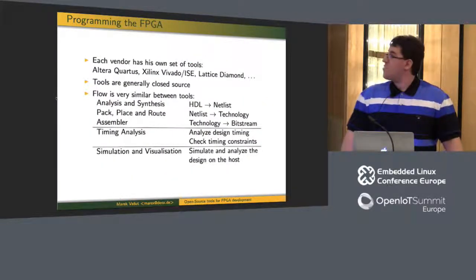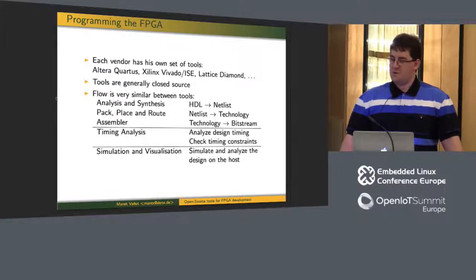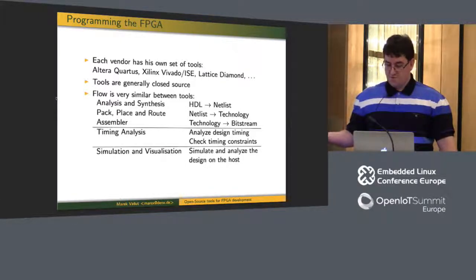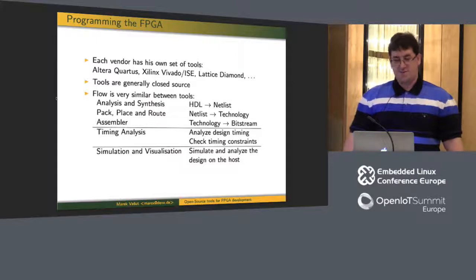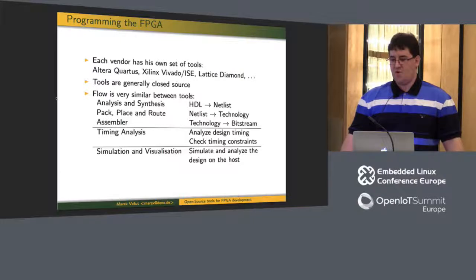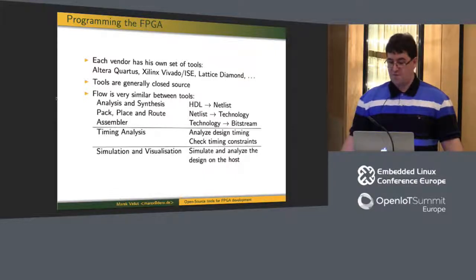Now let's look at how we program the FPGA. Each vendor provides a toolchain. These are typically proprietary, closed source, big packages — typically tens of gigabytes to download. Altera has Quartus, Xilinx has Vivado and ISE. The problem is that there's a lot of stuff, and most of it is not needed if you're working on a small project. Of course, for something big you still use a lot of these vendor tools.